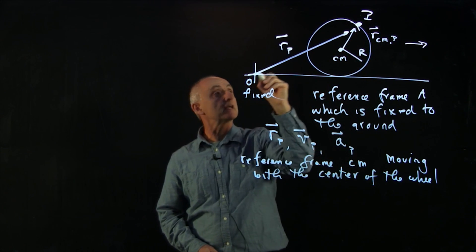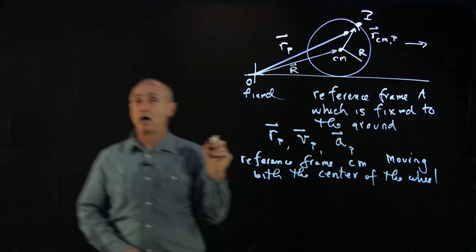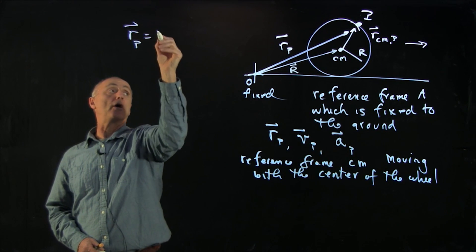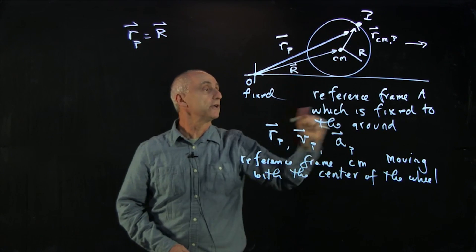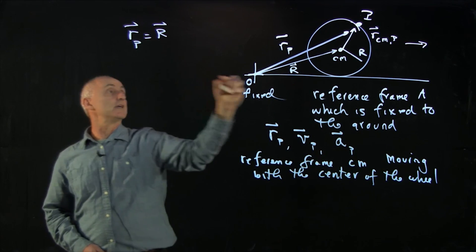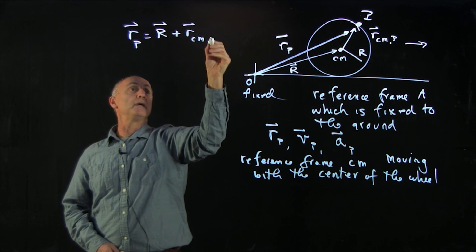Now, these vectors are connected, and we'll call this vector capital R. By our vector triangle, capital R equals little r_p. That's the position vector in the fixed frame of the ground, is given by capital R plus r_Cm_p.